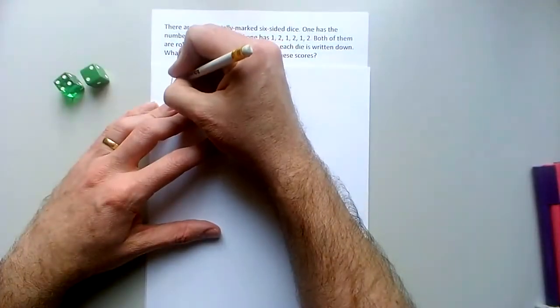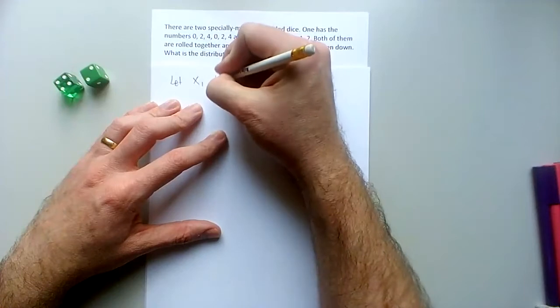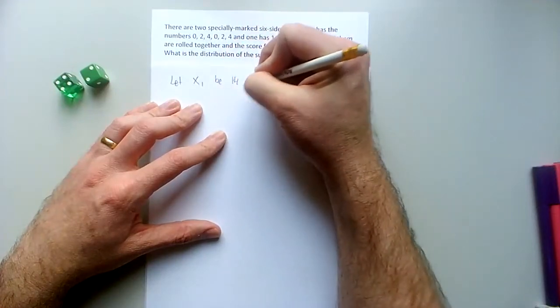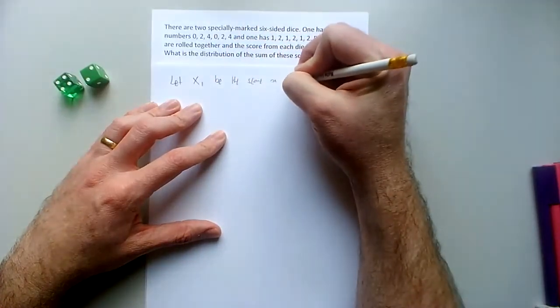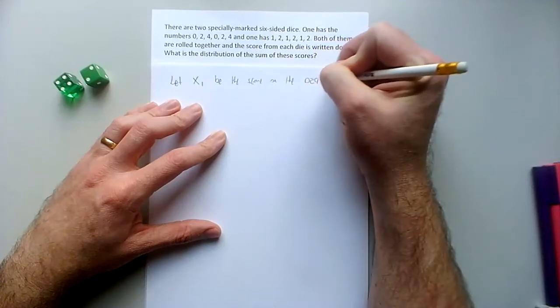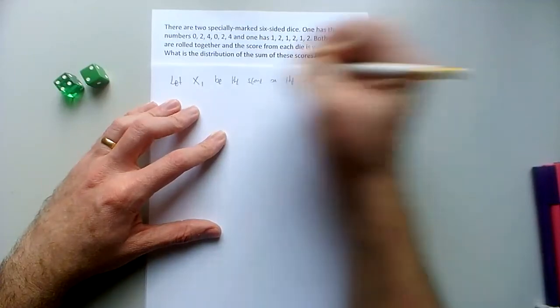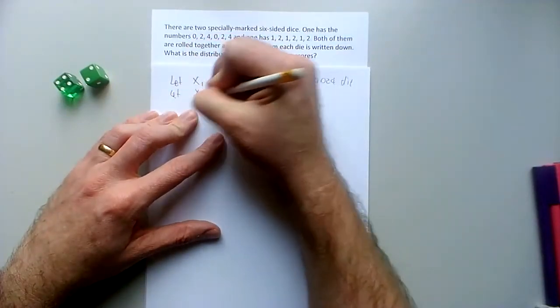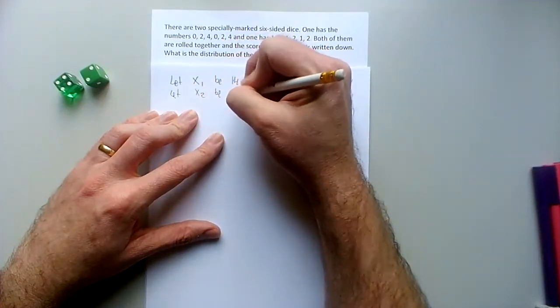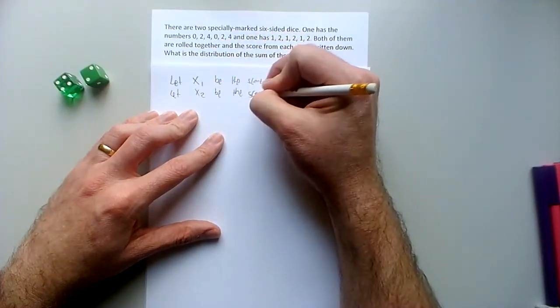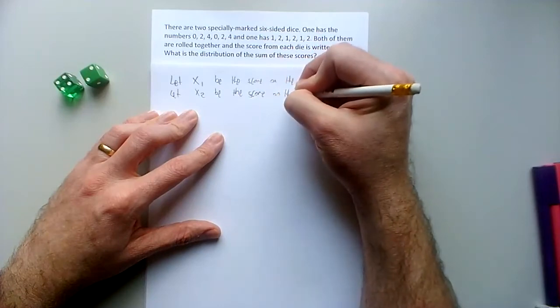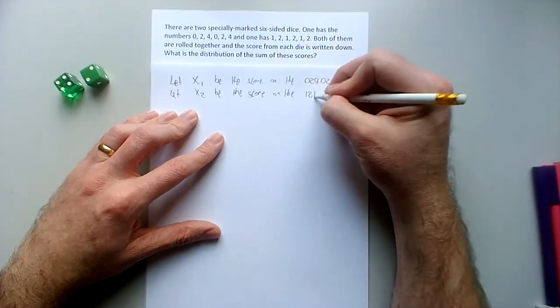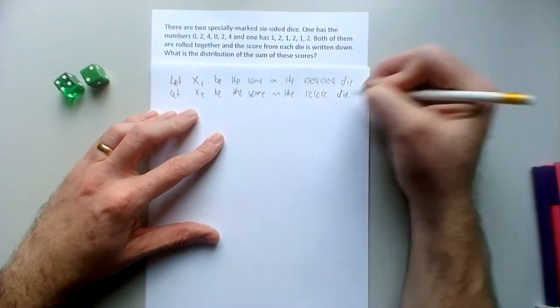So I reckon what I'm going to do is say let x1 be the score on the 0, 2, 4, 0, 2, 4 die. And let x2 be the score on the 1, 2, 1, 2, 1, 2 die.